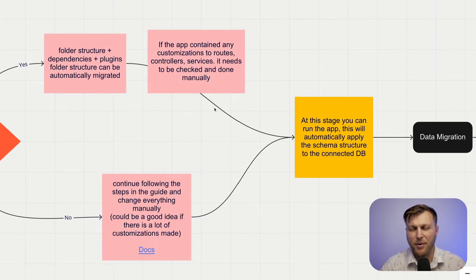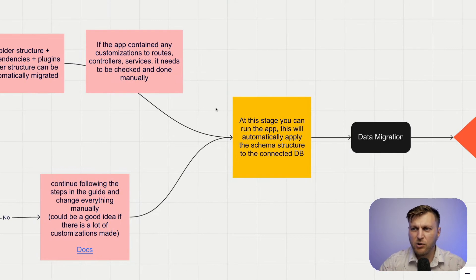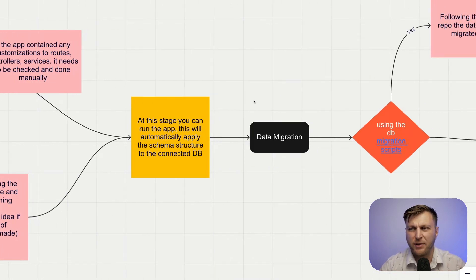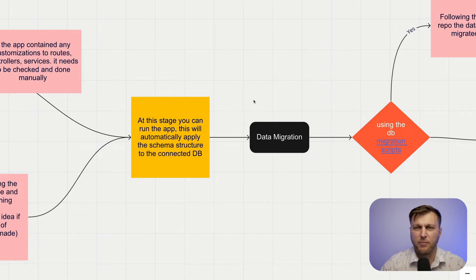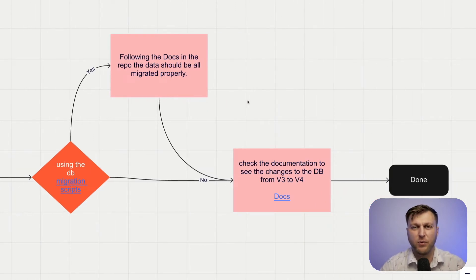The most important part of the migration process: any code customization that you wrote in addition to what the core Strapi application provided would still have to be migrated manually. Once you complete the manual process, your application should run and you'll move on to the next step, which is to migrate your database. We do have database migration scripts that will help you in the process. The migration scripts were created to help you migrate with the least amount of friction possible, and once you complete the database migration, you will be done with the whole process.